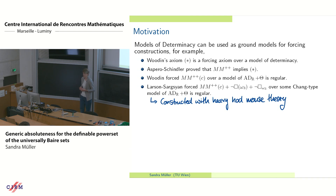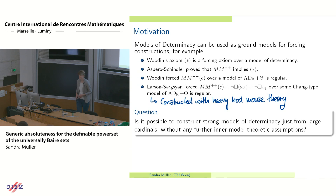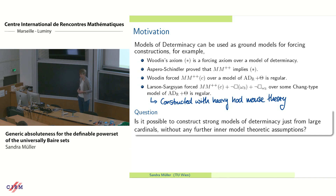So one of the questions behind the work I will speak about today is whether it's possible to get rid of these — I don't want to get rid of inner model theory entirely, but I want to get rid of the heavy constructions and heavy machinery behind it. Is there a way to construct such strong models of determinacy without knowing what a mouse is? The mice will be used for inspiration and motivation but actually not for the proofs and not for the statements of the results.